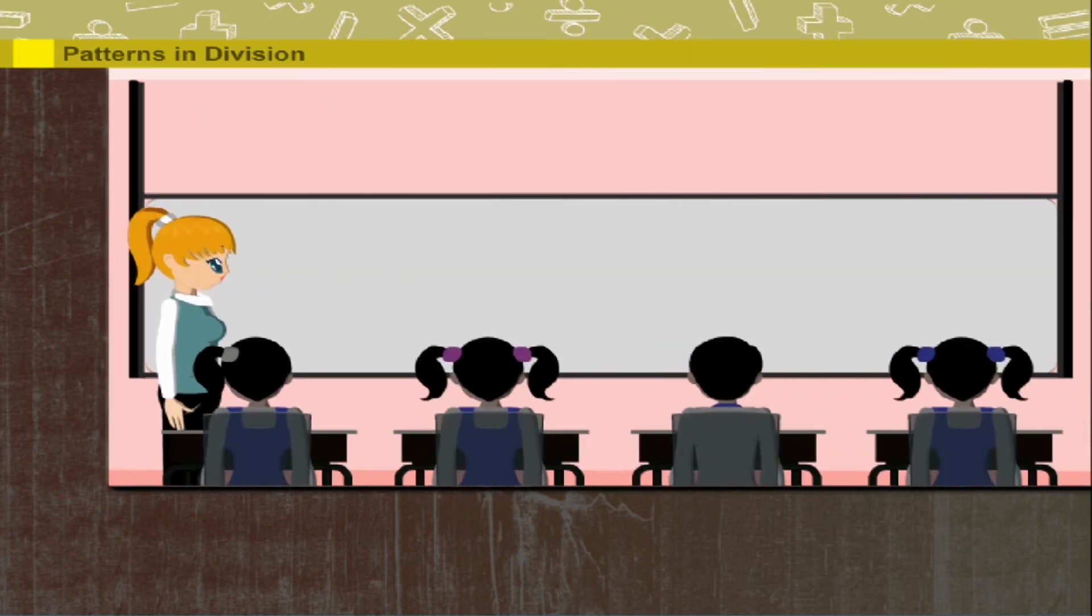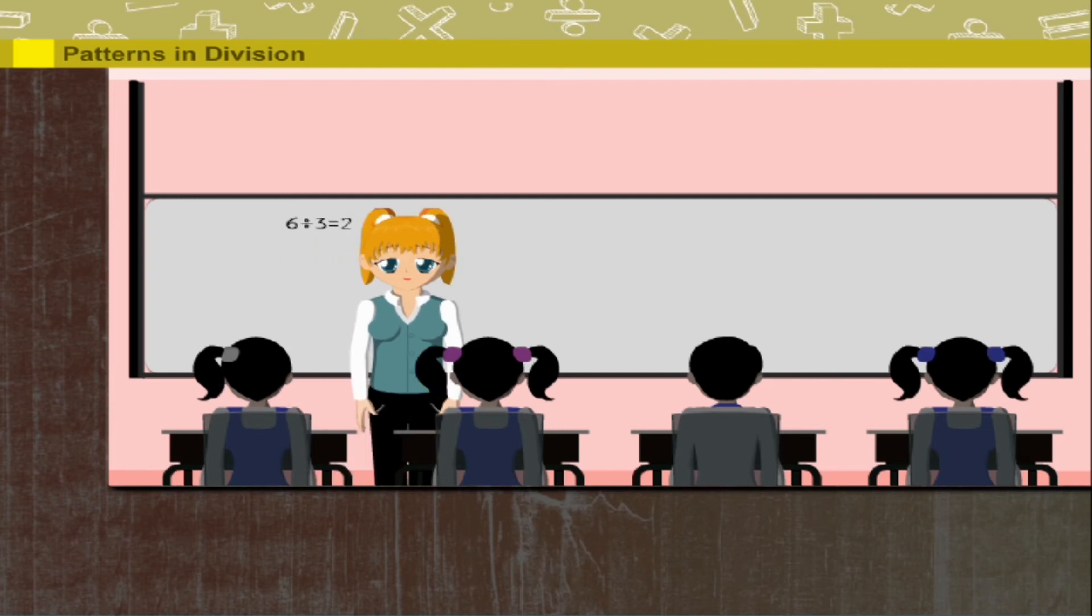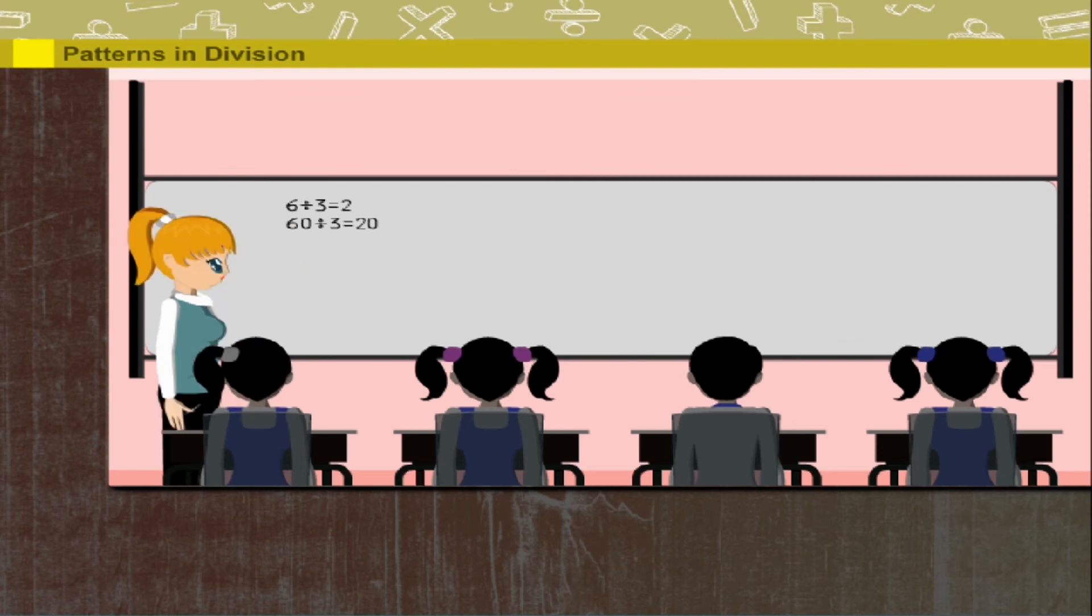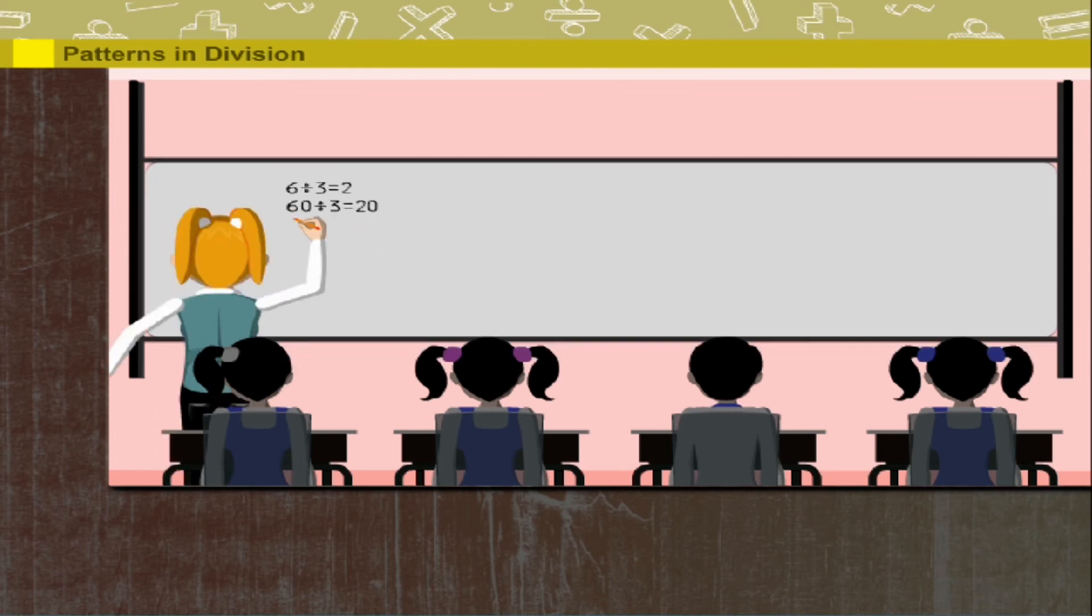Pattern in division. Teacher Nancy comes on the board. She writes 6 divided by 3 is equal to 2. 60 divided by 3 is equal to 20. It's easy to follow.